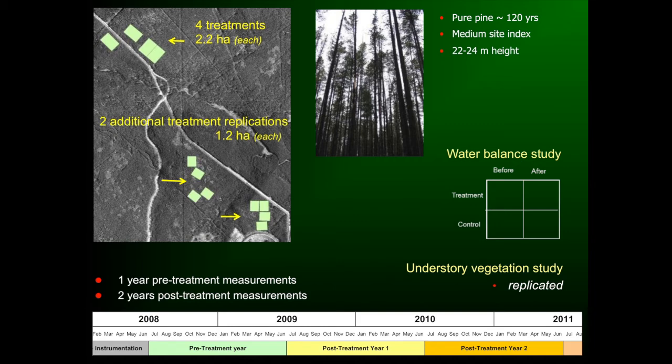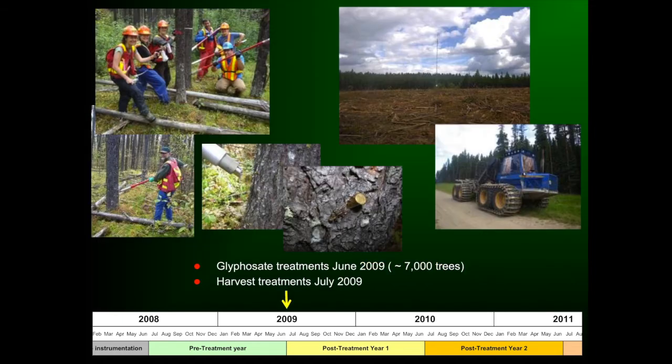For the vegetation understory work, we needed replication to get a broader sense of the response of these systems. So we set up two additional groups with the same four treatments, each 1.2 hectares. This vegetation study takes more of an analysis-of-variance, replicated approach. So the study design was: set up instrumentation, measure for a pre-treatment year, then follow the response for two years after treatment.